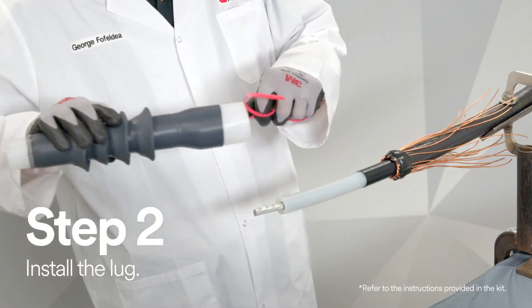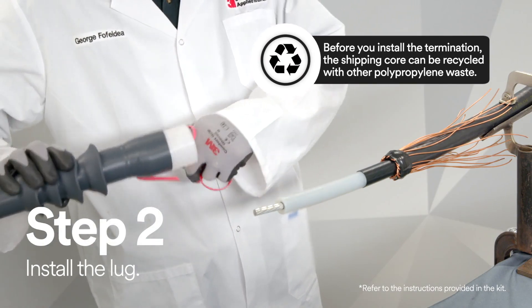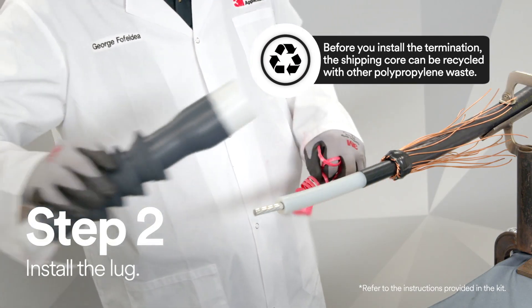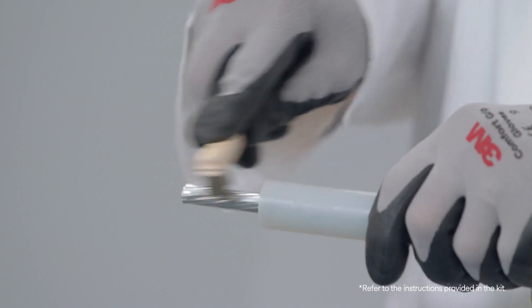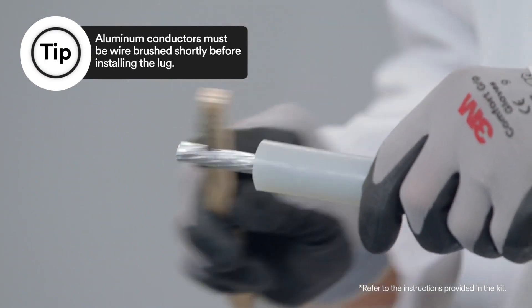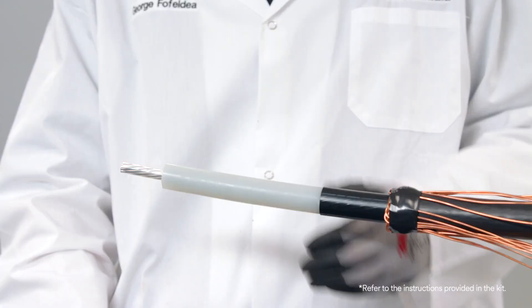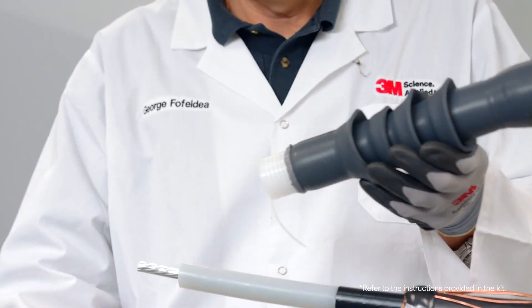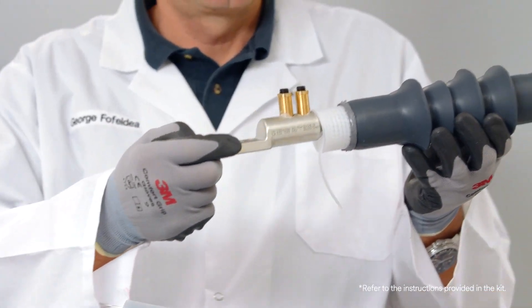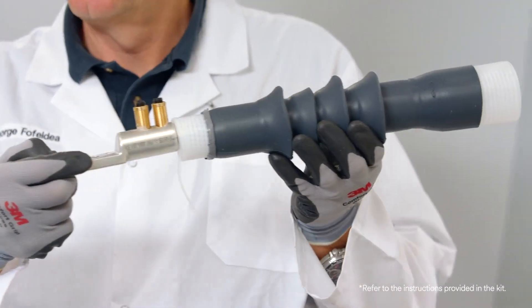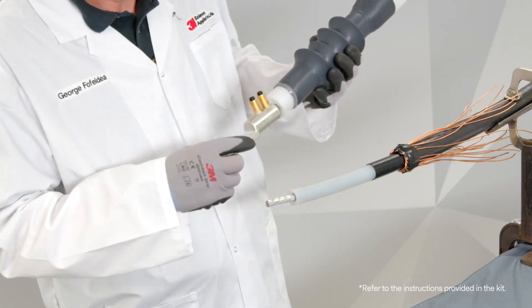After you prepare the cable you need to remove the red shipping core. Then you need to make sure that the 3M Cold Shrink QT3 silicone rubber skirted termination assembly fits over the selection lug or connector before you install either the lug or connector.